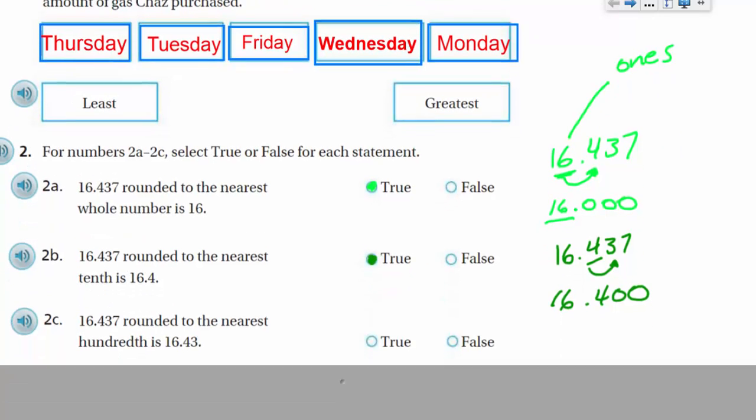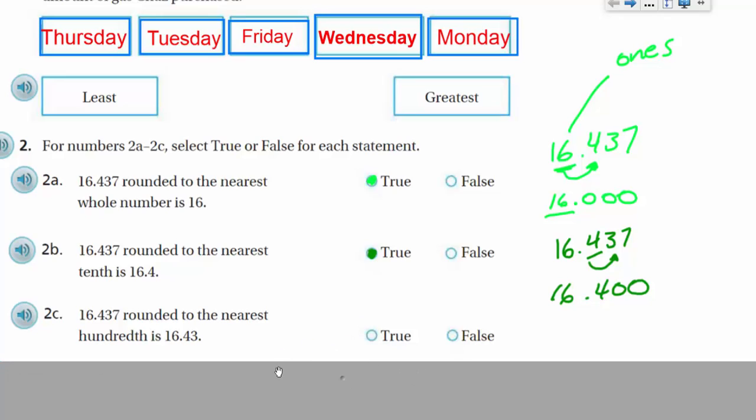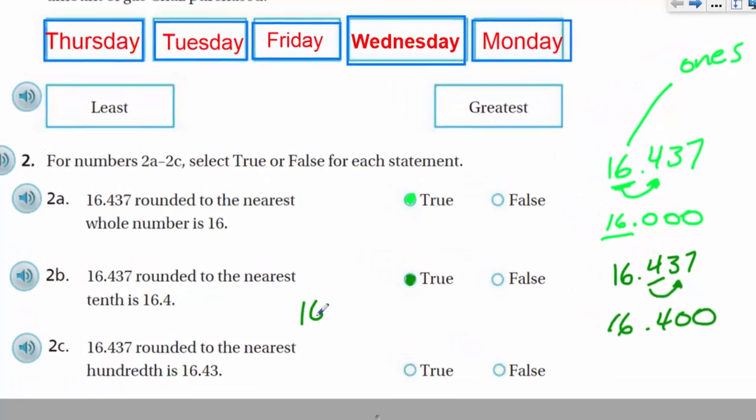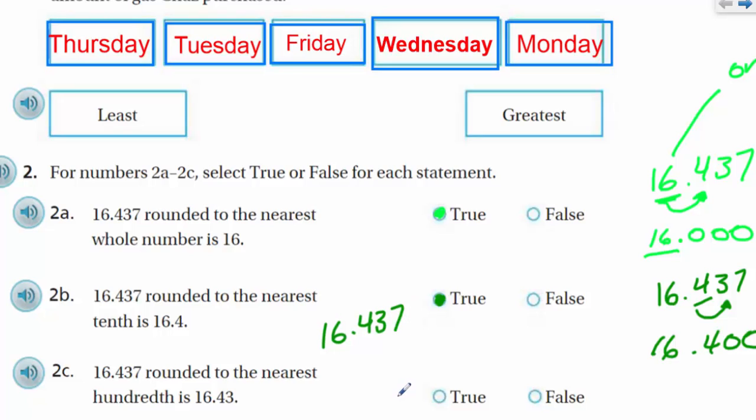All right, let's look at the next one. It says 16.437 thousandths round to the nearest hundredth is 16.43. Well, let's look at that. If we're looking at that same number and we're going to round to the nearest hundredth, here's the hundredths place. We're looking to the right. The 7 is going to decide what happens to the 3. The 7 is 5 or more. 5 or more means you have to up the score. Means he's telling the 3 you're going to have to up the score by 1 to go to 4. Therefore, our number would be 16.44. That is not what this says here. So I'm going to say false. No, that's not true.